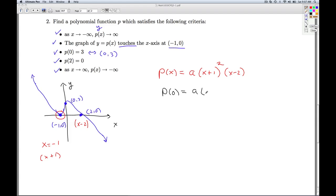And that'll determine what the a is. So P of 0 would be a times 0 plus 1 squared times 0 minus 2. And if I simplify this, I get negative 2a. And I know that P of 0 is supposed to be 3. That tells me a is negative 3 halves.